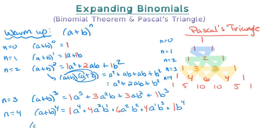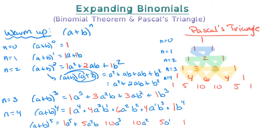We could really quickly write a plus b to the fifth. The coefficients are 1, 5, 10, 10, 5, 1 from Pascal's triangle. The exponents on a start at 5 and go down: a⁴, a³, a², a¹, a⁰. The b's do the opposite: b⁰, b¹, b², b³, b⁴, b⁵. You can double-check your work because your exponents should always add to equal the original exponent — so 3 plus 2 is 5, 4 plus 1 is 5, and so on.